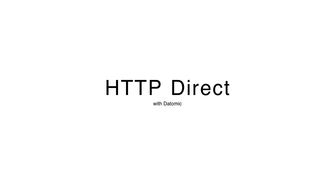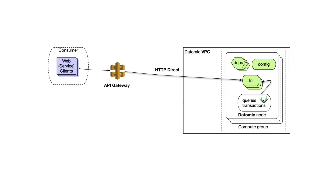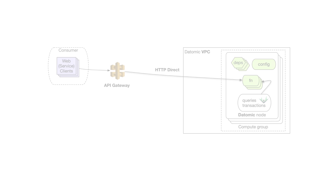Welcome to the HTTP Direct tutorial for Datomic. HTTP Direct allows you to connect an API gateway directly to a Datomic production topology compute group. Let's set up and use HTTP Direct.